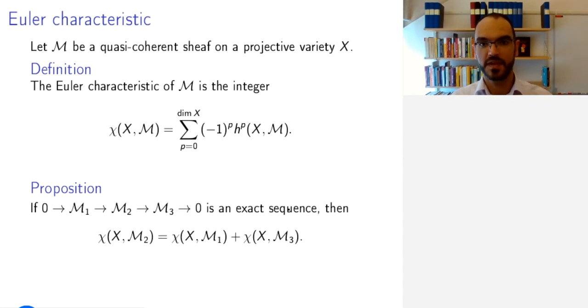The first property we will look at of the Euler characteristic, and that is a very useful property, is its additivity. So if I have an exact sequence of quasi-coherent sheaves on a projective variety, then the Euler characteristic of the middle term is the sum of the Euler characteristics of the outer terms. In particular, this happens, for example, if M₂ is the direct sum of M₁ and M₃. So we have additivity over direct sums, but more generally over arbitrary exact sequences.